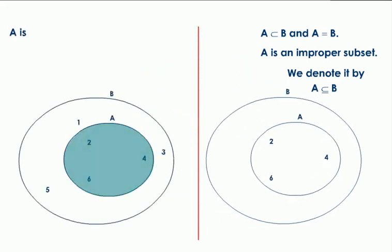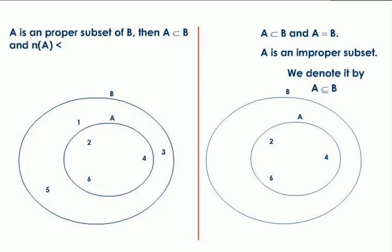If A is a proper subset of B, then the cardinal number of A is less than the cardinal number of B. In such a case, we write A is a subset of B.